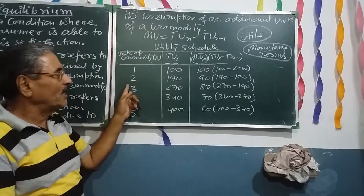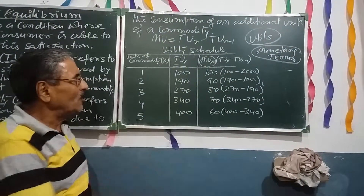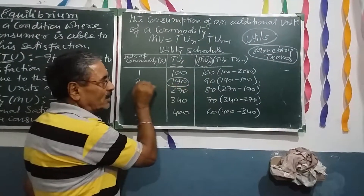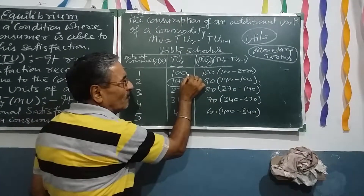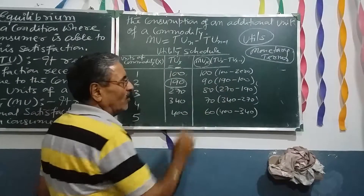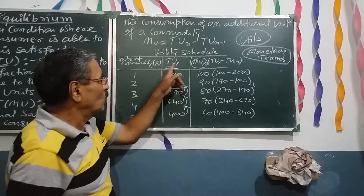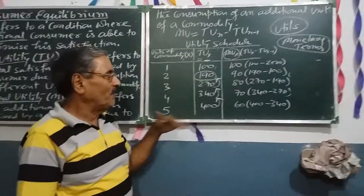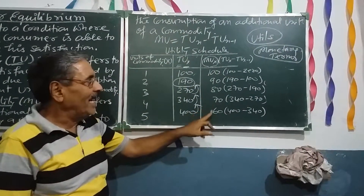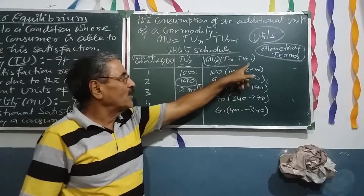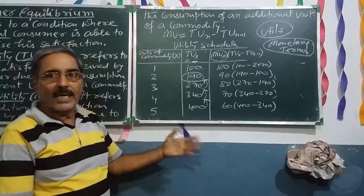For the second mango, the marginal utility is 90. How? The total utility after consuming the first and second mango was 190. Subtracting the total utility from the first mango: 190 minus 100 equals 90. Every time we subtract the previous total utility from the new total utility. Following this process, the marginal utilities are found to be 100, 90, 80, 70, and 60 — each time calculated as TU(n) minus TU(n−1).